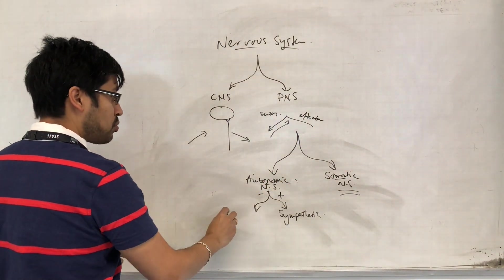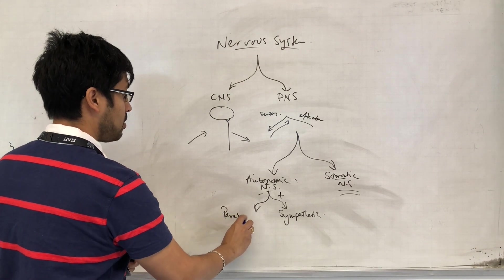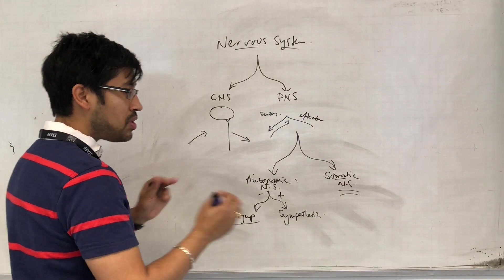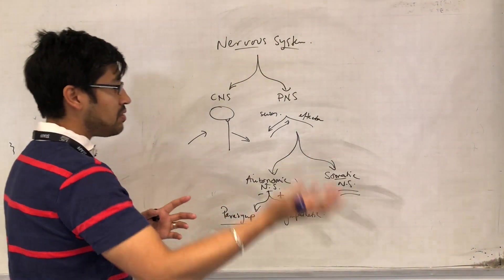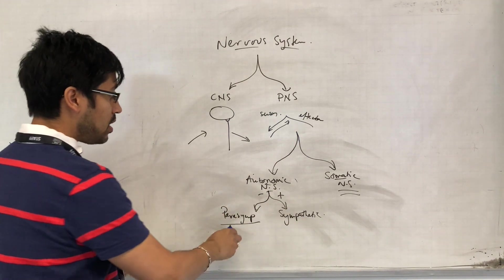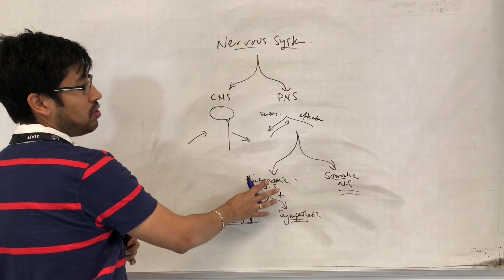And the other branch does the opposite - that is called the parasympathetic. So anything that needs to be controlled in an increasing or decreasing way involuntarily is the autonomic nervous system.